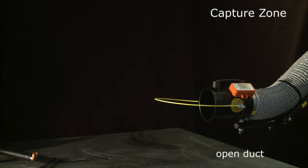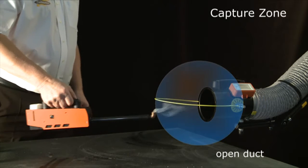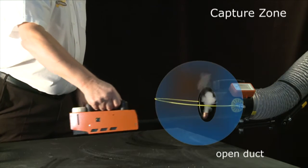The capture zone is the space in front of the hood where the air velocity is sufficient to capture the contaminant cloud. One way to envisage it is as a bubble in front of the hood. Inside the capture zone, almost all the contaminant will be captured.